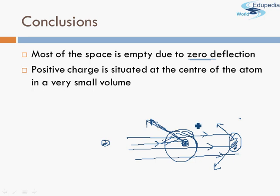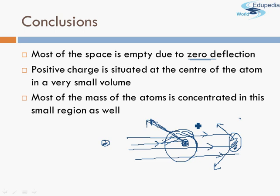Rutherford also made further calculations of the trajectory and the angle by which various Alpha Particles were deflected, and concluded that most of the mass of the atom is concentrated in this small central region as well. This was quite obvious because electrons had already been discovered — he knew electrons are of very low mass and are not present at the center, which means most of the mass must be present at the center, the same center which contains the positive charge, so that the atom as a whole is electrically neutral. Based on this conclusion, Rutherford came out with a new atomic model, and Thomson's atomic model was debunked. We started studying Rutherford's atomic model, which we'll see in our next session.